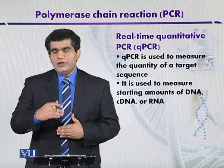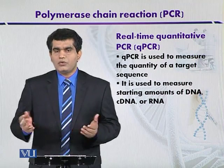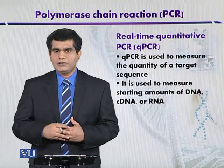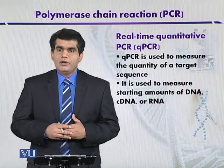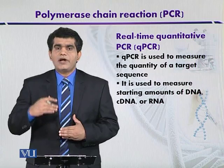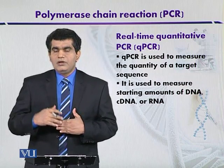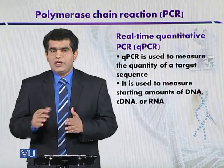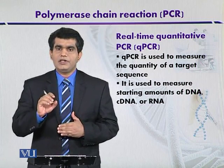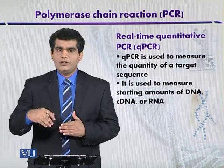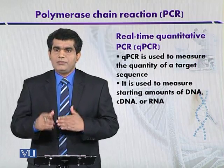This approach to calculate the DNA molecule after a particular number of cycles was first used by Higuchi and co-workers in the early 1990s. They used a chemical called ethidium bromide, which is an intercalating agent. It can intercalate between the nucleic acid bases and after intercalation it can give fluorescence. It is highly specific and binds to double-stranded DNA molecules.